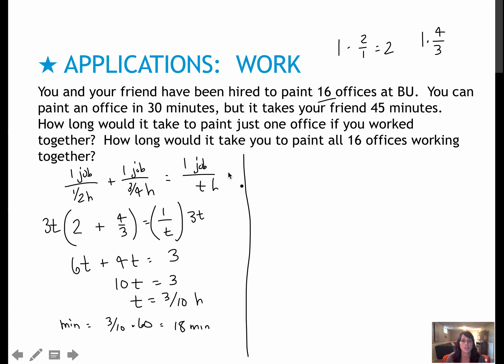Now, if we're doing all 16 offices, do I have to do an equation like this again? I already know that together it would take 3/10 of an hour. So I just take 16 times 3/10, which gives me 48/10 or 4.8 hours. To turn that into hours and minutes, that's four hours, and then 8/10 times 60 equals 48. So four hours and 48 minutes for all of the offices. That's 18 minutes for one office or four hours 48 minutes for all 16 offices.